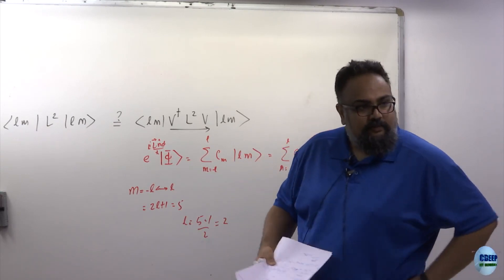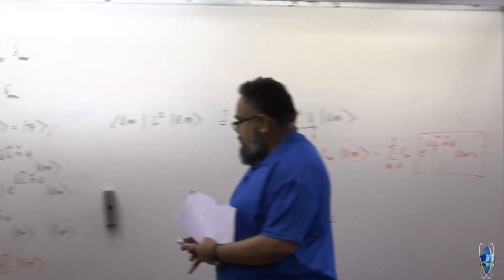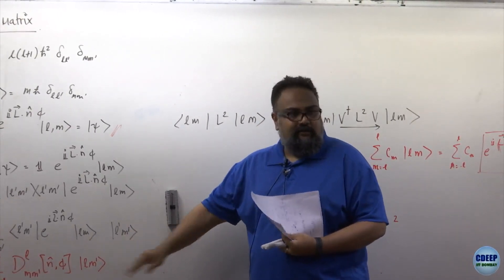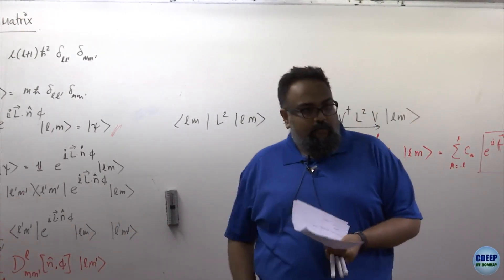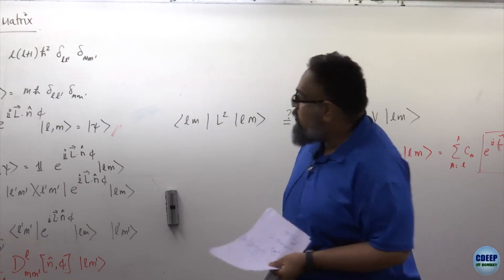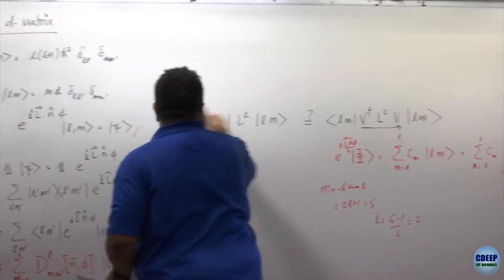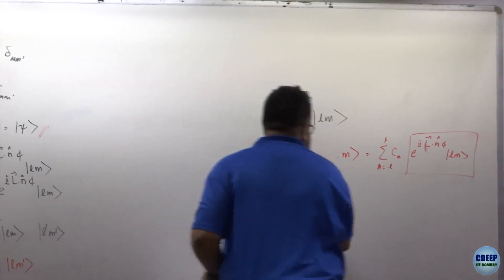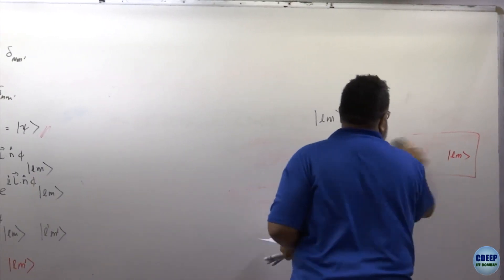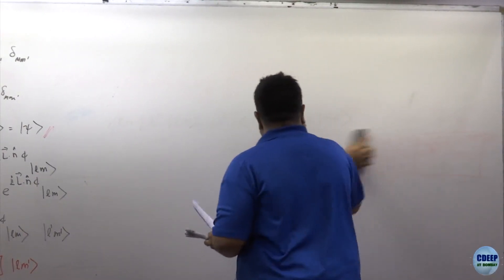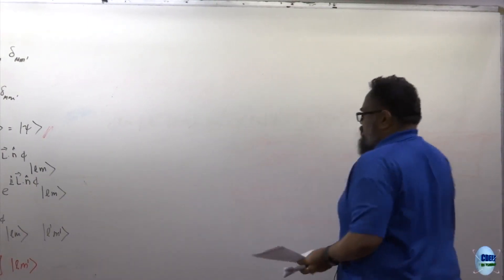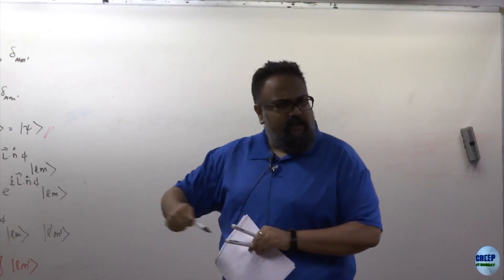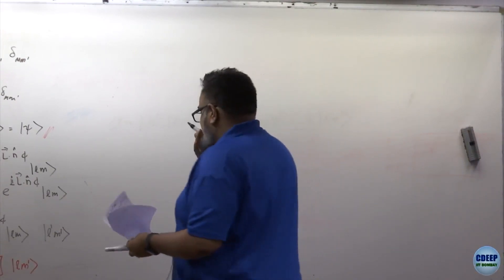Essentially all I'm going to do is take two minutes to calculate D, and then we're done. There is a lot more here — the Wigner D matrix has entire books written on it. But this will just be the beginning of your next course. The reason I am doing this is because we have all the algebra to do it right now, and you can just see it for what it is.